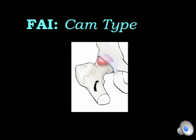If you imagine the hip as a ball and socket joint, with the hip flexing up and the bump engaging into the socket and causing damage there — this is the essence of cam type impingement.